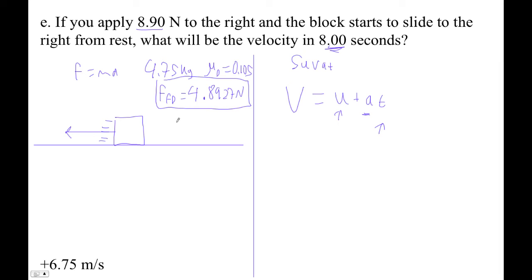So if I am sliding to the right, then this friction force is to the left. And then there's some unknown. No, we apply 8.9 newtons to the right. And then let's find the acceleration. Negative 4.8927 plus 8.9 equals 4.75 times a.